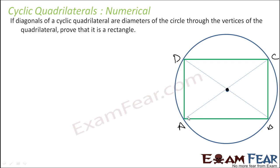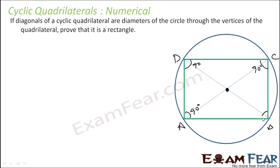Diagonal AC will subtend an angle of 90 degrees. If BD is a diagonal, BD will subtend an angle of 90 degrees. Similarly, if AC is a diameter, it will subtend an angle of 90 degrees. All these angles are 90 degrees — that means it is a rectangle.